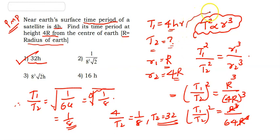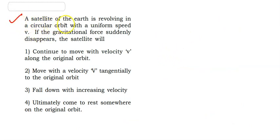To summarize, we used Kepler's third law (T² proportional to R³) to relate the two orbits. Next question: A satellite of Earth is revolving in a circular orbit with uniform speed. If the gravitational force suddenly disappears, the satellite will — four options: continue to move with velocity V along the original orbit, move with velocity V tangentially to the original orbit, fall down with increasing velocity, or ultimately come to rest somewhere on the original orbit.